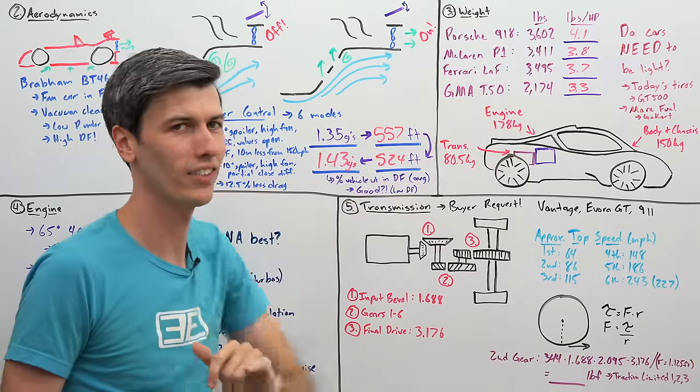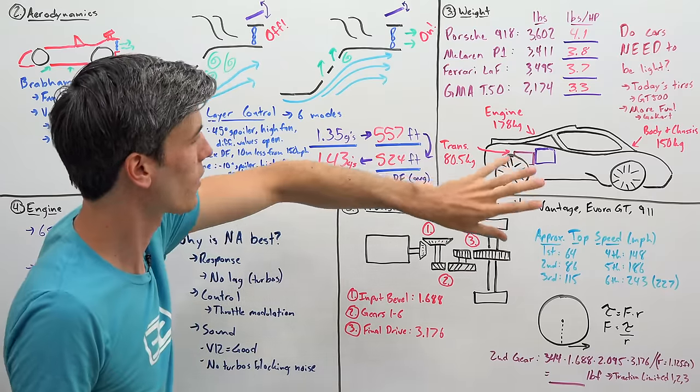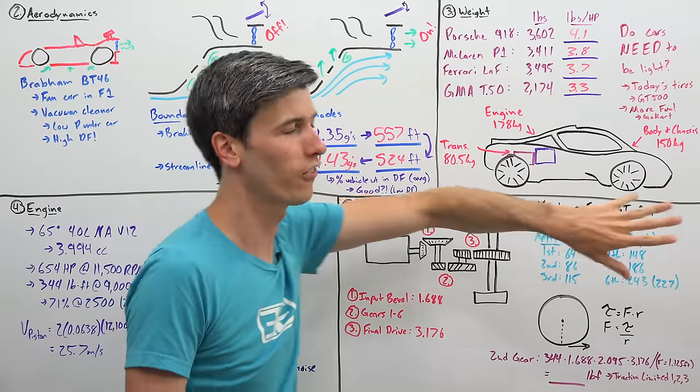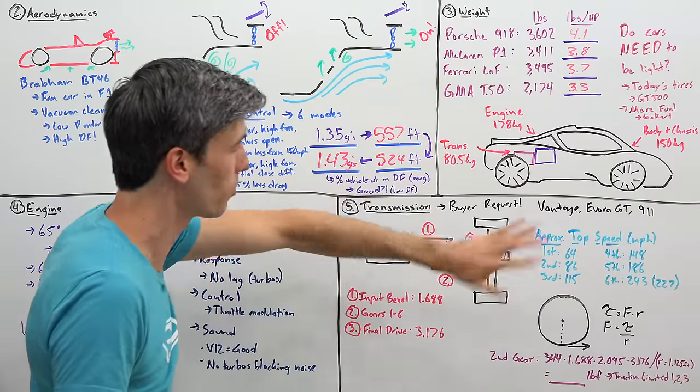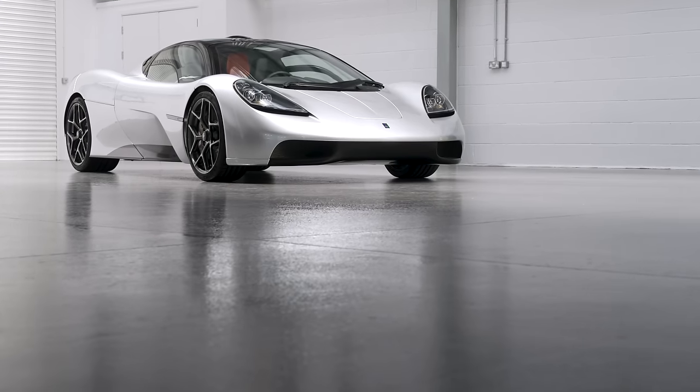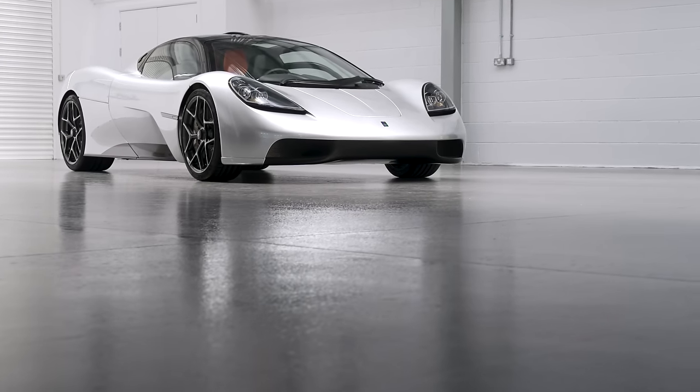The engine, only weighing 178 kilograms. The carbon tub and all of the body panels combined, just 150 kilograms less than the engine. Pretty absurd. The transmission, 80.5 kilograms. So, they've done an insanely good job on keeping the weight of this vehicle down.